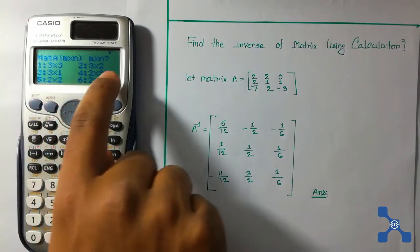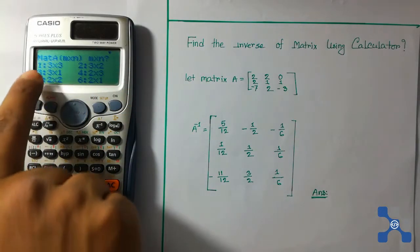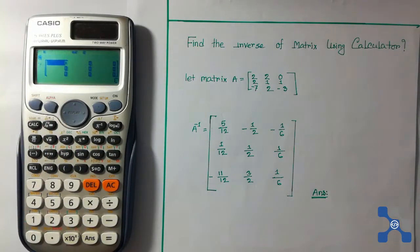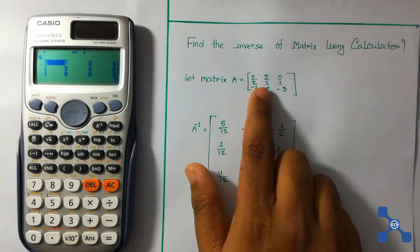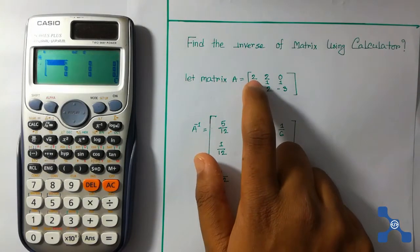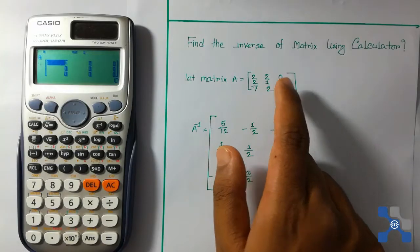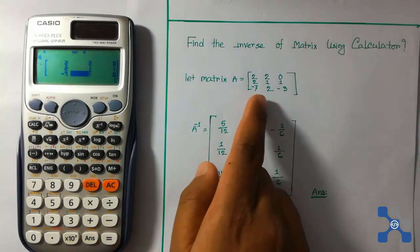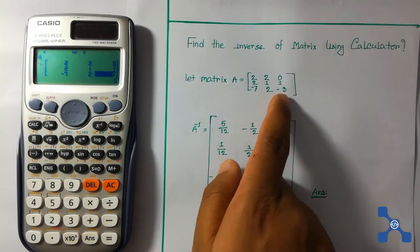Press 1 for 3 by 3 and now load the elements on the calculator. The first row is 2, 2, 0. Second row is 2, 1, 1. And the third row is -7, 2, -3.